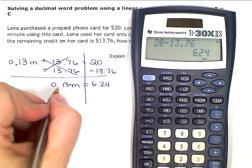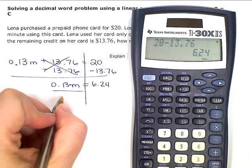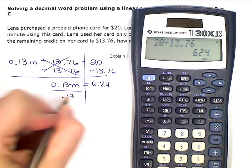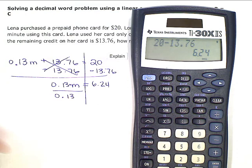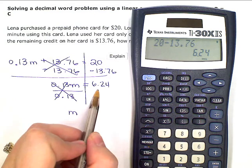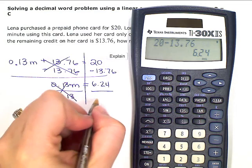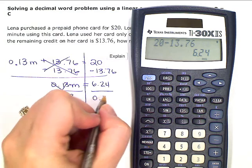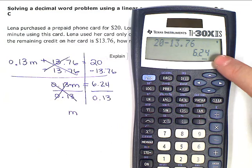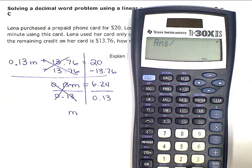So the inverse would be to divide by 0.13. That will eliminate it on the left side, leaving me with just M. But to keep my equation balanced, if I divide by 0.13 on the left, I also have to divide by 0.13 on the right. So I'm going to take this 6.24 and divide by 0.13.